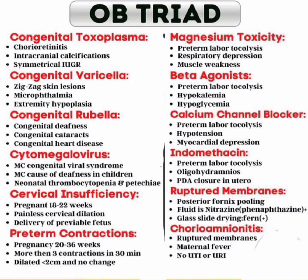Next, preterm contractions: the triad is pregnancy 20 to 36 weeks, more than three contractions in 30 minutes, dilated less than two centimeters and no change. Next, magnesium toxicity triad: preterm labor tocolysis, respiratory depression, and muscle weakness.